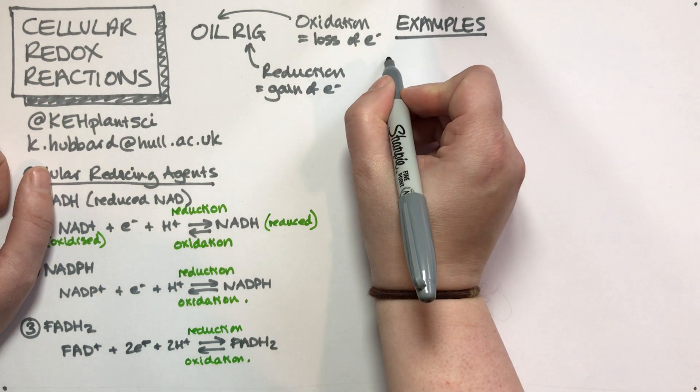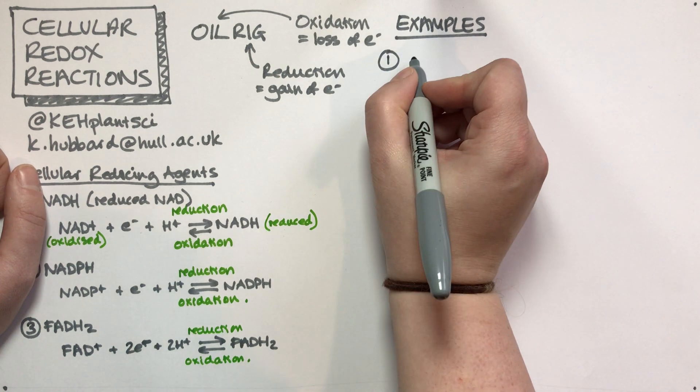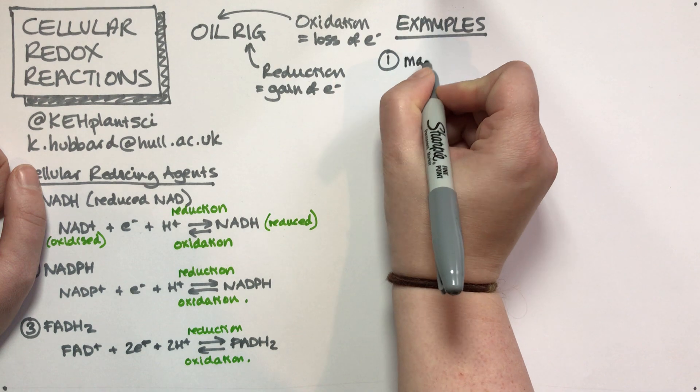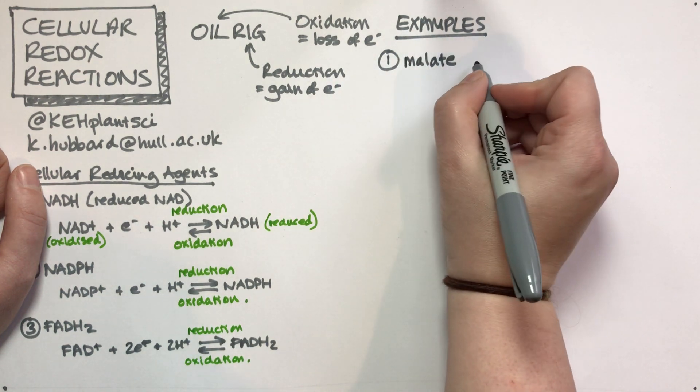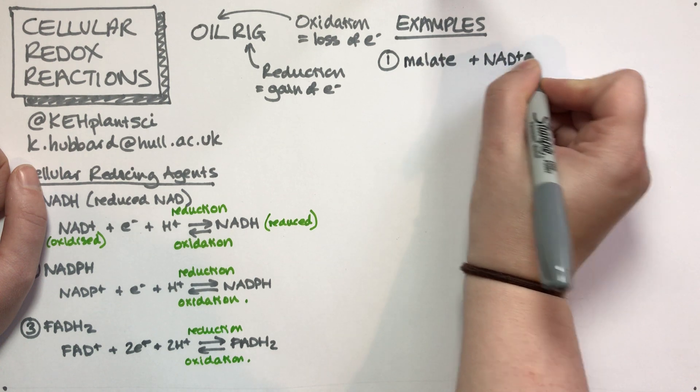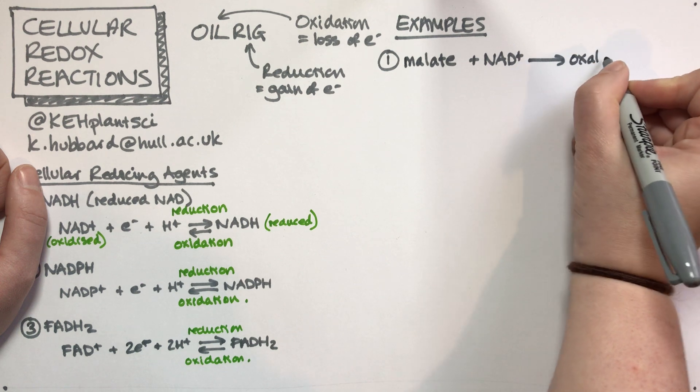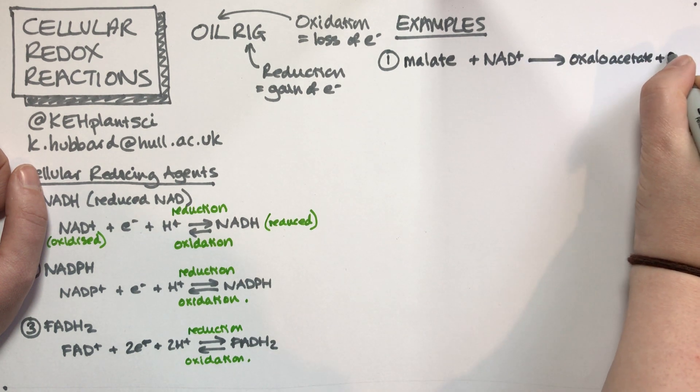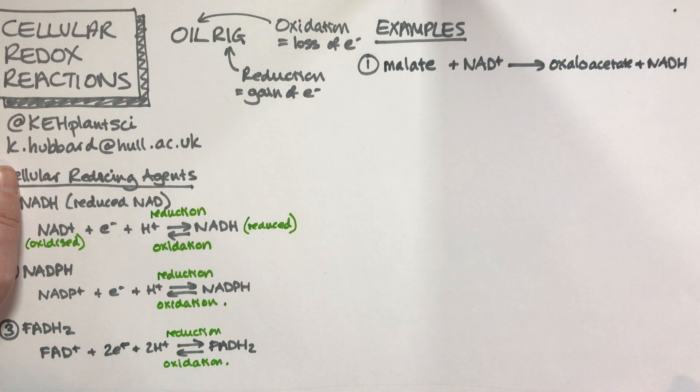Let's think about some examples of how this works in metabolism. Our first example is a reaction from the Krebs cycle or citric acid cycle. We have malate, which is a four-carbon sugar, plus NAD+ goes to oxaloacetate plus NADH.